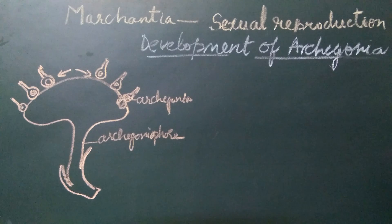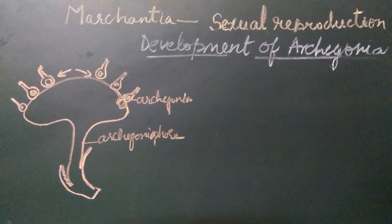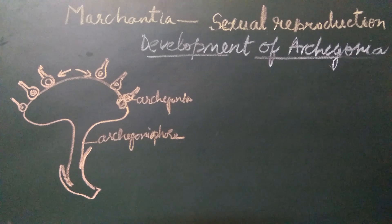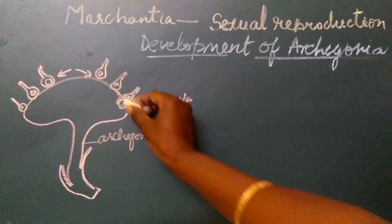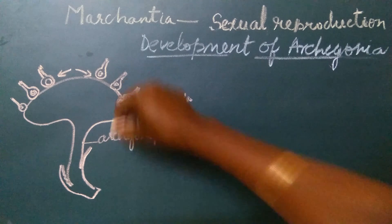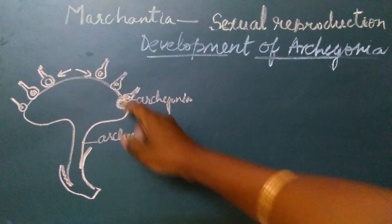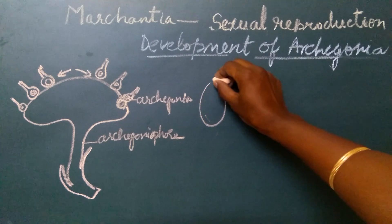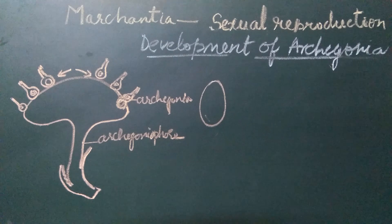This single cell divides to form the complete archegonia, which has a venter, a neck, and inside the neck: neck canal cells, cover cells, venter canal cell, and egg cell. That whole structure develops from a single superficial cell very close to the growing tip of the lobe. This cell is identified as an archegonial initial, and I am going to draw it here.